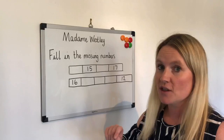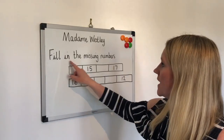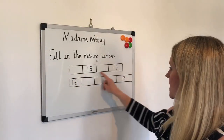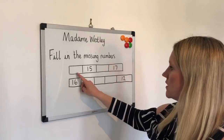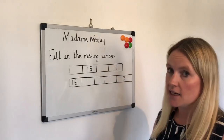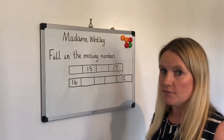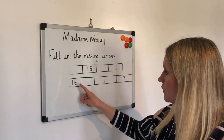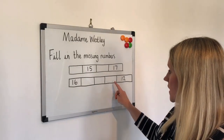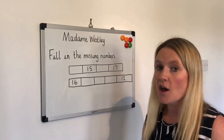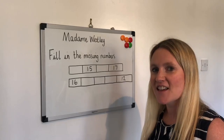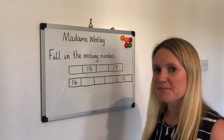First question: fill in the missing numbers. On this line we've got something, 15, something, 17. And on this line we've got 16, something, something, something, 12. I'm going to give you 30 seconds to do this on your whiteboard.